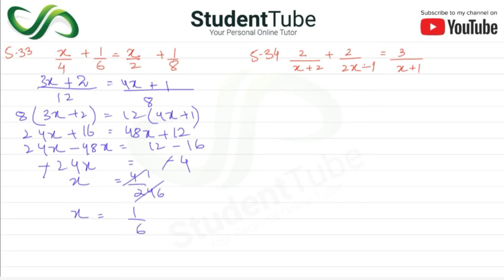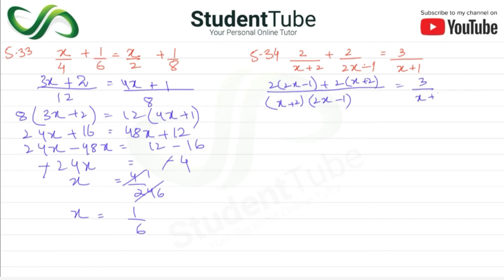New question: LCM of (x+2) and (2x−1). Multiply by (2x−1): 2 multiplied by (2x−1) gives 4x−2, and multiply by (x+2) gives 2x+2, over (x+2)(2x−1) equal to 3/(x+1).